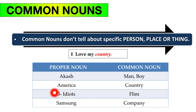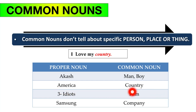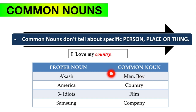'Three Idiots' is a specific movie, so it is a proper noun, but 'film' or 'movie' is the common noun. Similarly, 'Samsung' is a brand name — a proper noun — but 'company' is the common noun. So the specific name of a thing is a proper noun, while the general category it belongs to is the common noun.